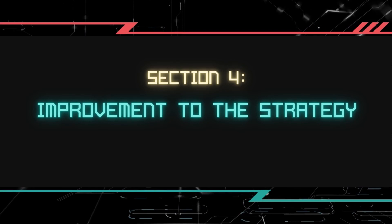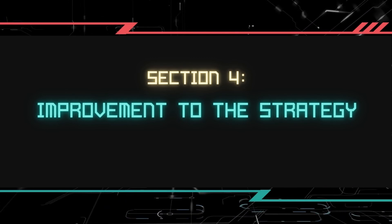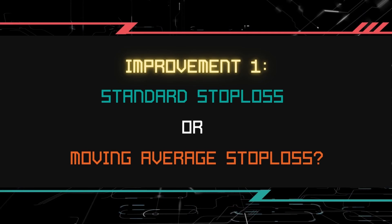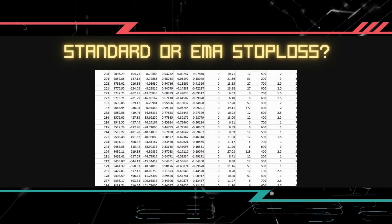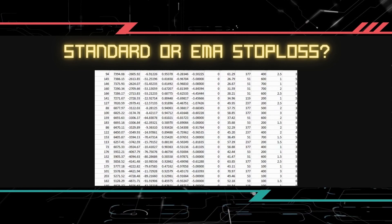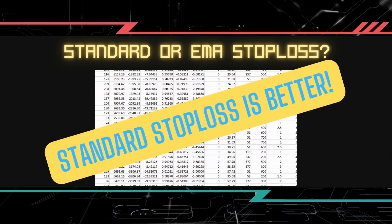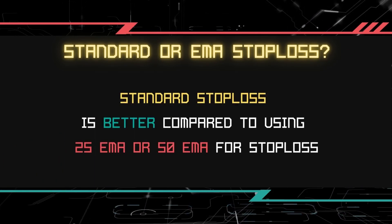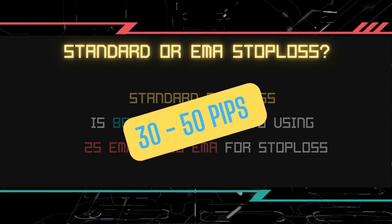In this section, we will analyze the results and share with you our findings from using this strategy. We will also provide a simple way to improve the strategy. The first question we want to answer is: does fixed stop loss perform better than stop loss with reference to exponential moving averages? We analyzed all the settings that gave positive results and found that all the positive results were from the fixed stop loss. This shows that using fixed stop loss is better compared to using the 25 EMA or 50 EMA as reference. Specifically, the stop loss level between 30 to 50 pips gave better results.